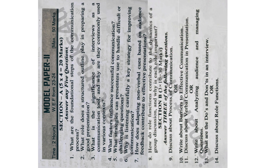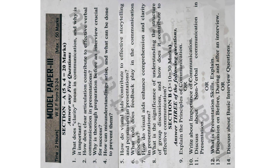Model Paper 3, Section A — short questions. This paper is very easy. First question: What does clarity mean in communication and why is it important? Second question: How does clear articulation contribute to effective verbal communication in presentations? Third question: Why is thorough preparation before an interview crucial for success? Fourth question: How can misunderstandings arise and what can be done to prevent them?